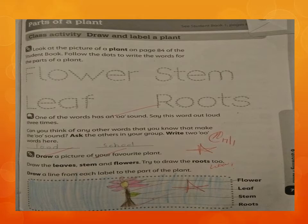Can you think of any other words that you know that make the 'oo' sound? Write two 'oo' words. You all know so many words which have an 'oo' sound. For example, food — F-O-O-D — food has a double 'o' and an 'oo' sound. School — S-C-H-O-O-L — school also has a double 'o' and a long 'oo' sound.